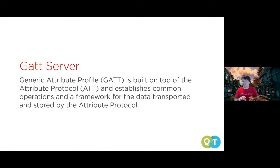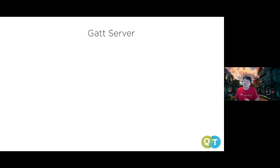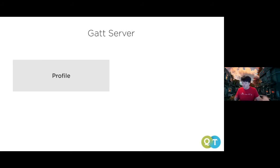The BLE GATT (Generic Attribute Profile) spec is built on top of the attribute protocol and establishes a framework for data transport. It's hierarchical: at the top level is a profile, which is like an OpenAPI spec for the device — it tells you all the services available. Within services there are characteristics, which you can think of as the entities you want to operate on.